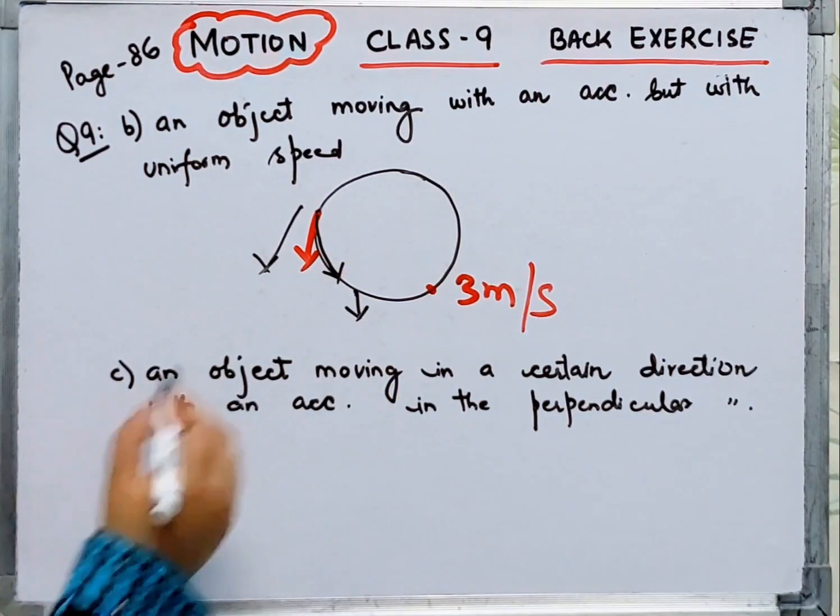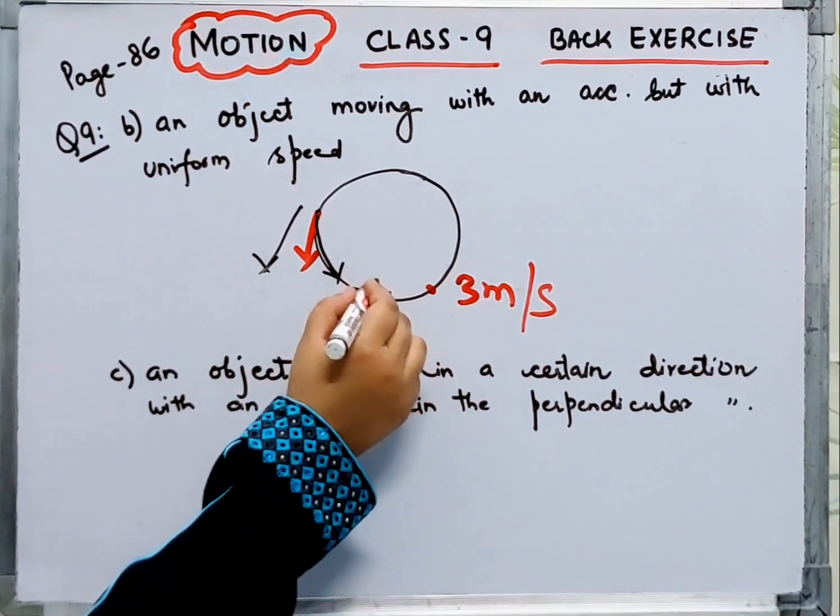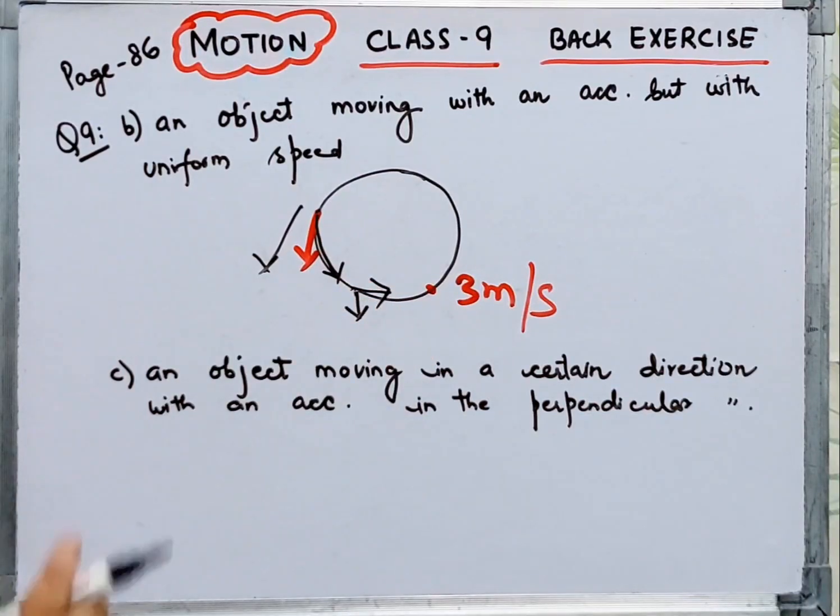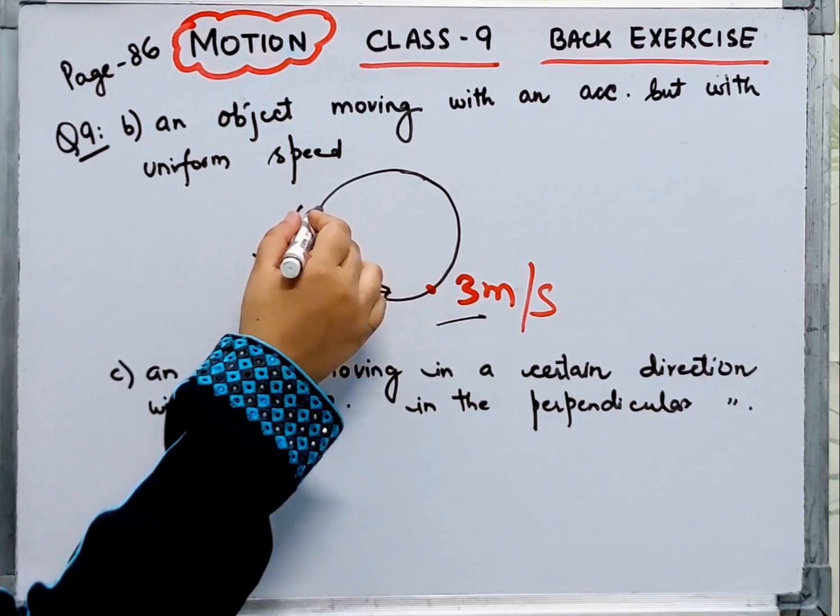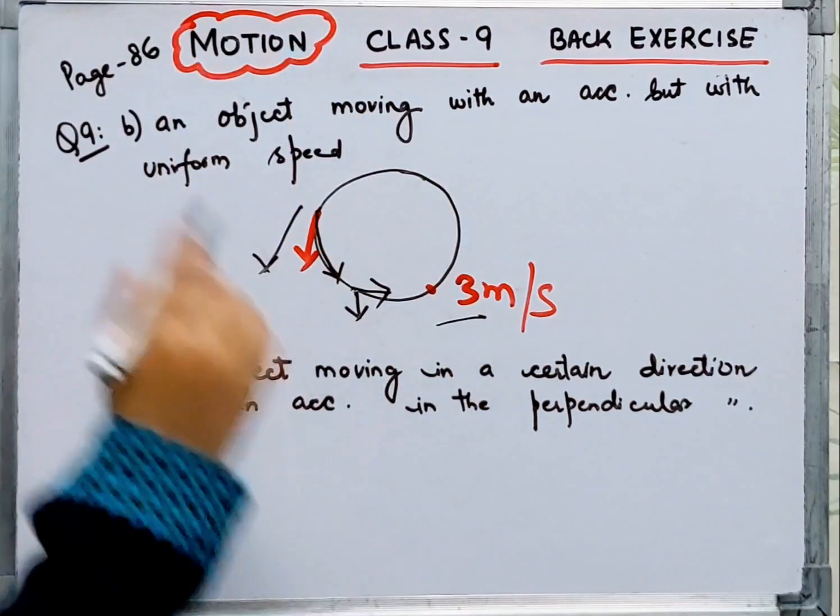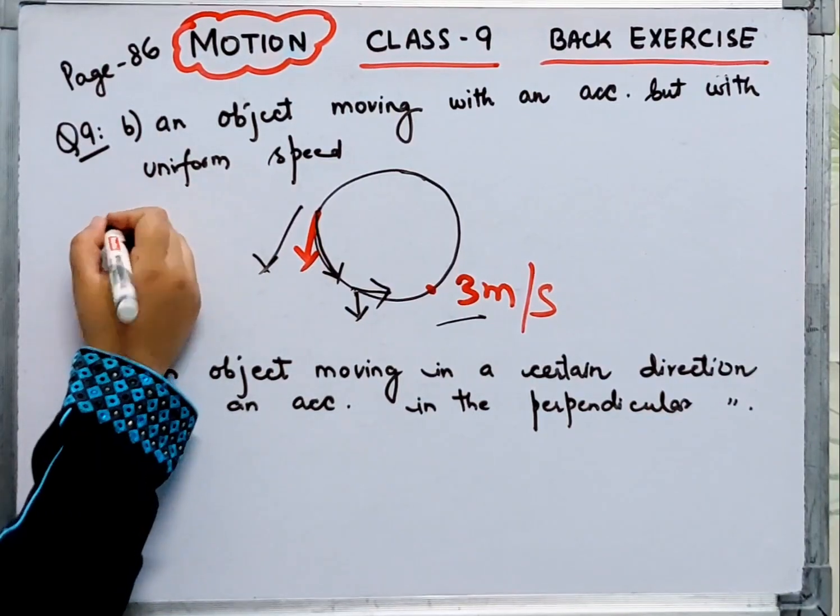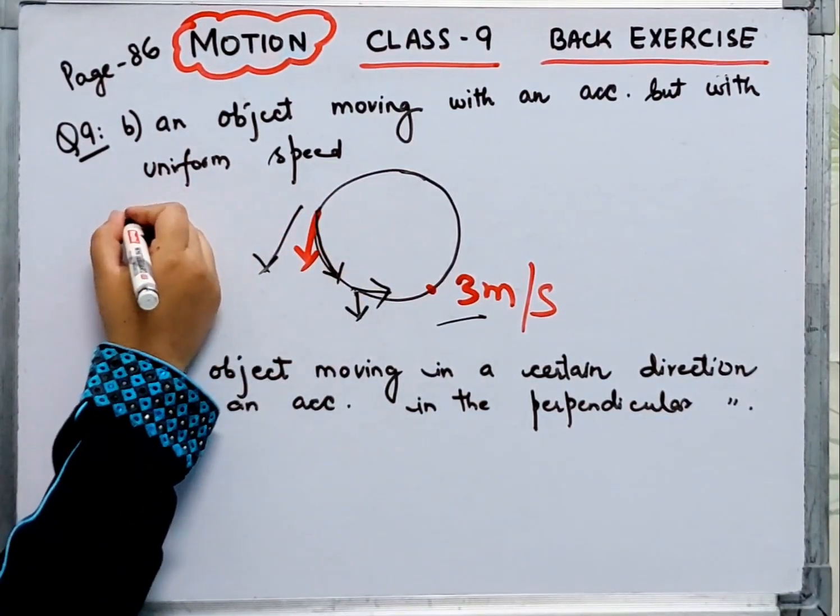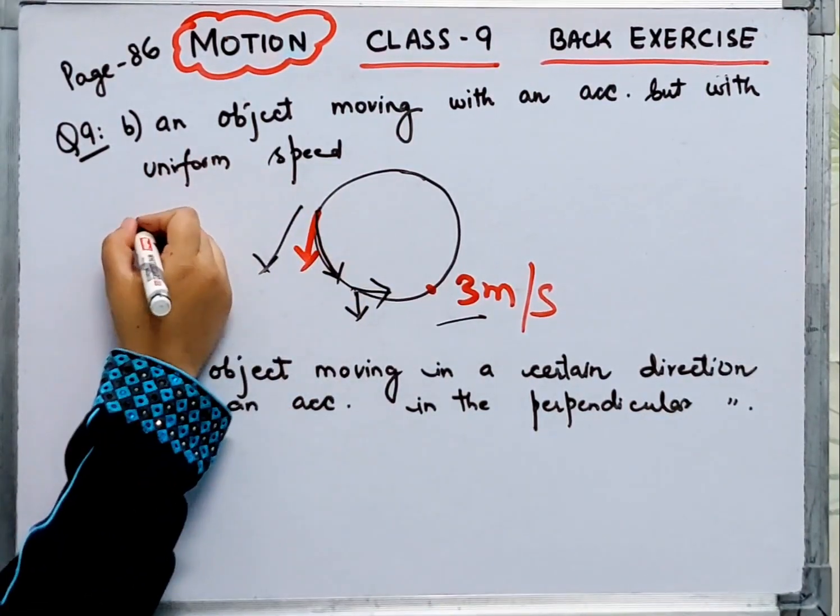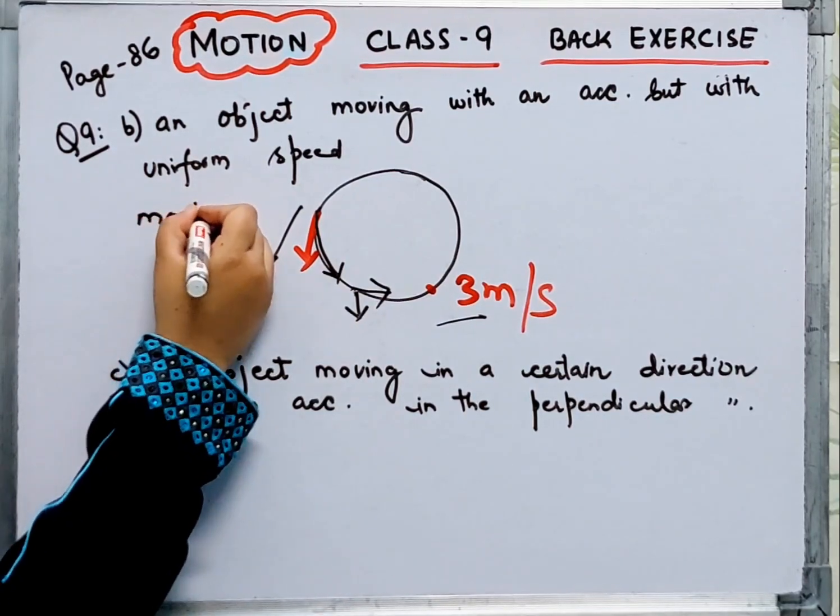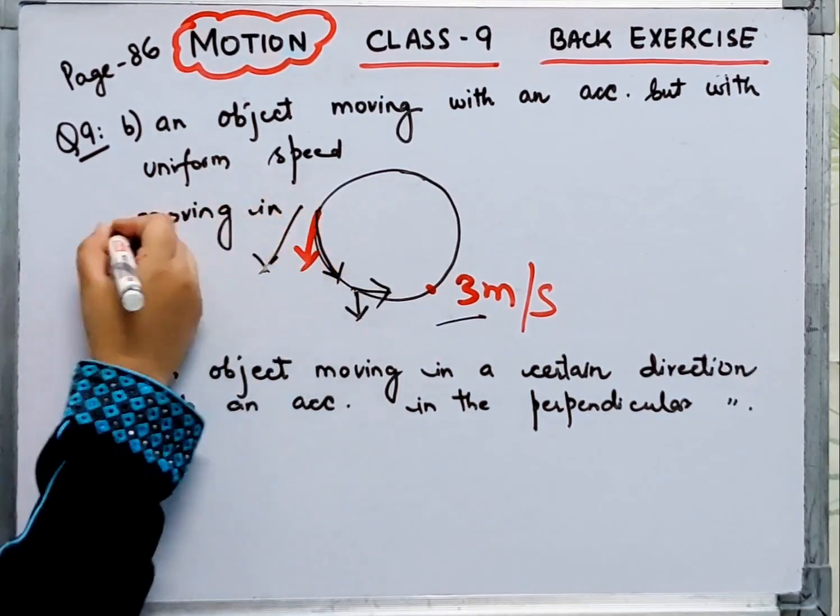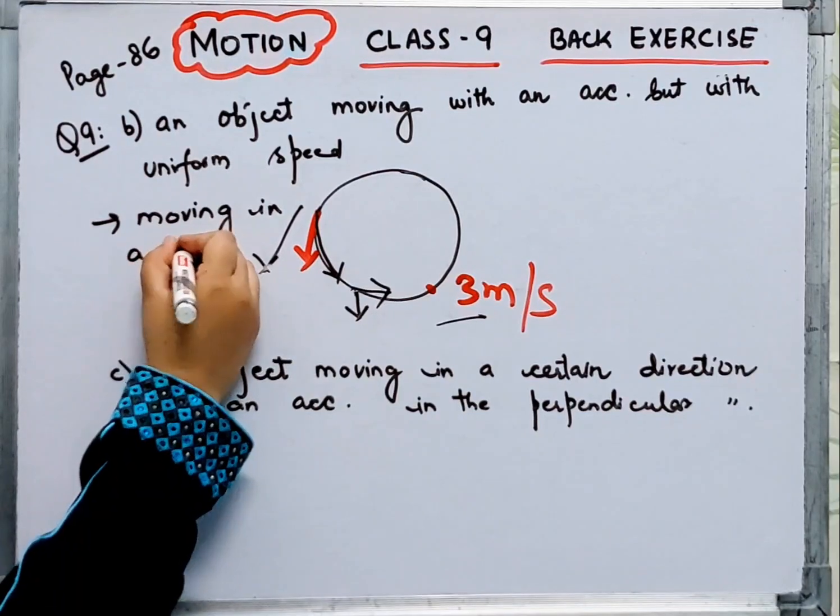So what happens when you move in a circular motion? You can say this example is an object moving in a circular path.